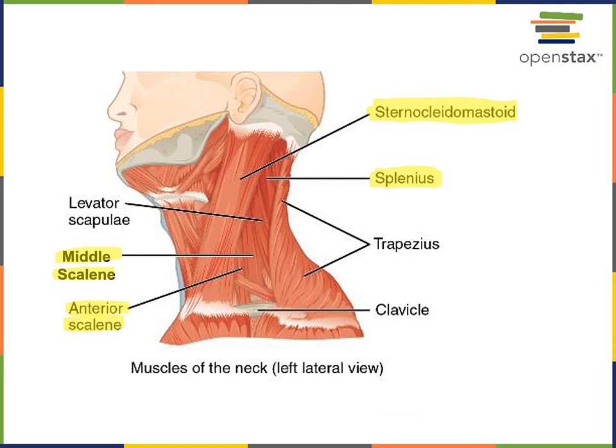The action of the scalenes is to elevate the ribs. The other muscles we see here — levator scapulae and trapezius — are appendicular muscles, and so we'll come back to them when we discuss the muscles that position the pectoral girdle.